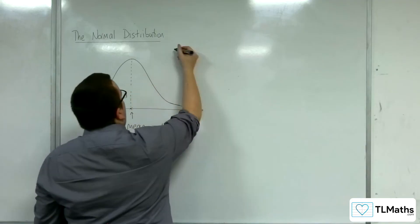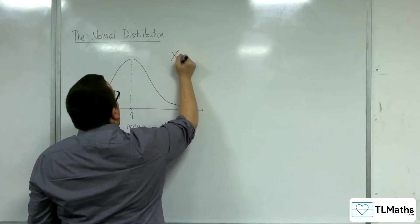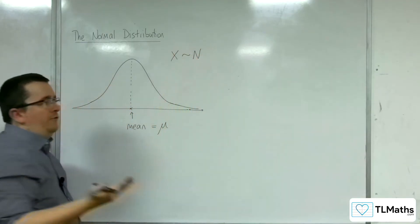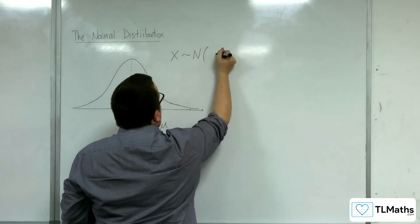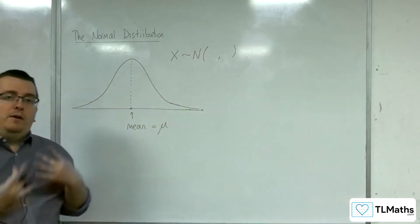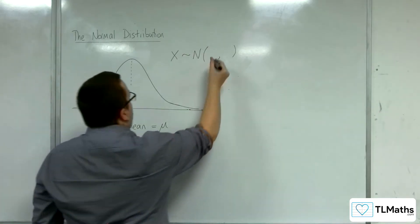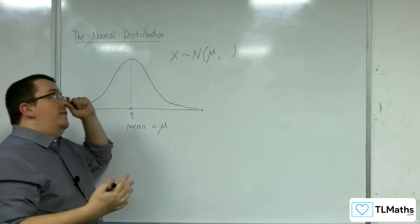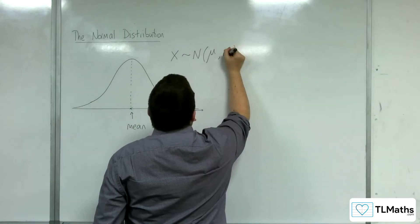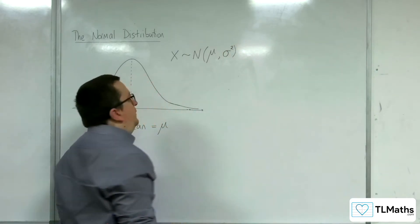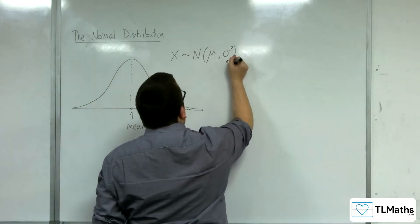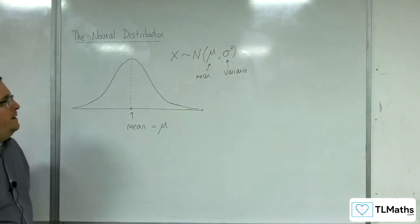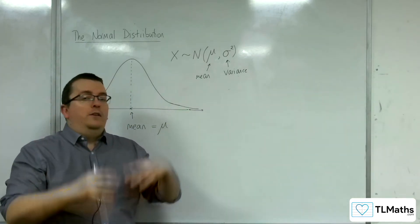The way that we describe a normal distribution uses mathematical notation: we say that the distribution X, followed by a tilde symbol, is normally distributed — we use a capital N. Inside we write the two pieces of information that describe the distribution: the mean mu is written first, and then rather than just writing the standard deviation we write the variance, which is sigma squared. So we have the mean and the variance, and with those two bits of information that is all you need to describe the distribution.